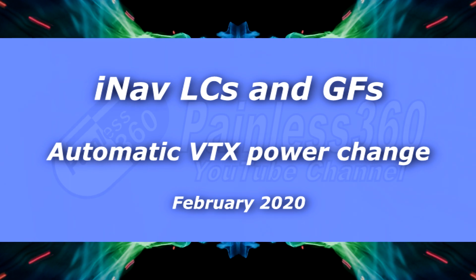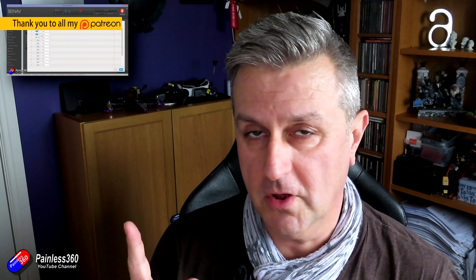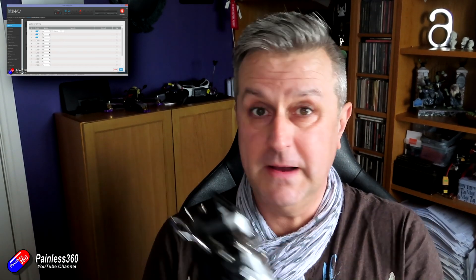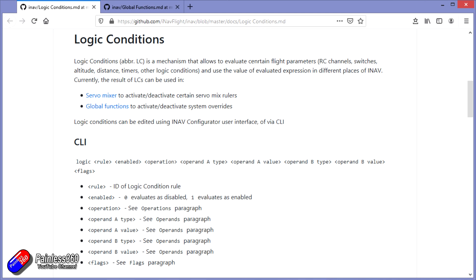Hello and welcome to the video. This is a follow-up to a video I did a while ago talking about logic conditions and global functions in iNav. In that example, I set up my radio so I could flick one three-position switch and select three video transmission powers for the FPV system. The power of logic conditions is much bigger than that, so this video is going to get a little bit technical. If you don't understand things like boolean logic, you might want to tap out - I'll try to make it as easy to follow as possible, but some people even struggled with the last one.